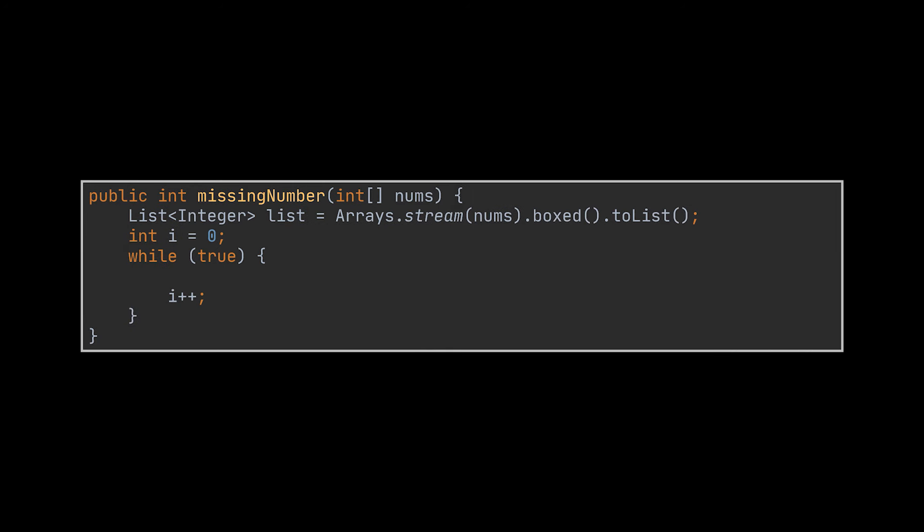The first solution that may come to your mind is loop over the elements 0 to whatever the length of the array is or make use of the infinite while loop syntax to avoid having multiple return statements as we did here. Then attempt to find each one of these values in the given array. The first element we don't hit is the answer to our problem. You may have noticed that in the worst case this implementation can reach an O of n squared complexity. So how do we optimize it?